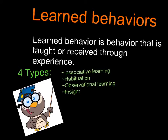Learned behaviors. What are learned behaviors? It's a behavior that is taught or received through experience. For example, us humans are pretty much learning everything every single day, whether it's to talk, a subject, or how to eat properly. I'm going to talk about four types of learned behaviors: associative learning, habituation, observational learning, and insight.